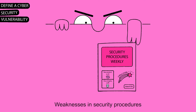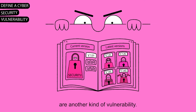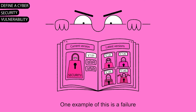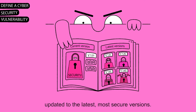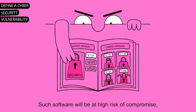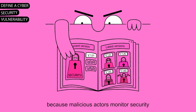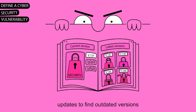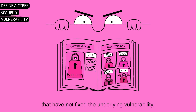Weaknesses in security procedures are another kind of vulnerability. One example is a failure to patch or keep software updated to the latest, most secure versions. Such software will be at high risk of compromise because malicious actors monitor security updates to find outdated versions that have not fixed the underlying vulnerability.